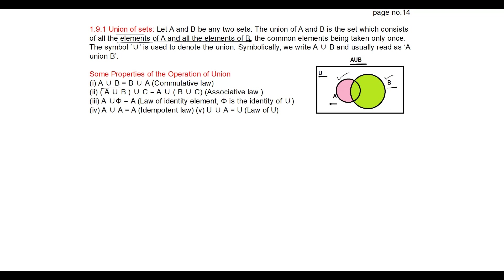Some properties of the union operation: Commutative property — A union B is equal to B union A. Associative property — (A union B) union C is equal to A union (B union C). Identity property — A union null set equals A, because the null set contains no elements. Idempotent law — A union A equals A. Law of universal set — U union A equals U, because all elements of the universal set appear in the result.